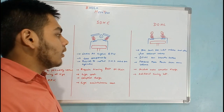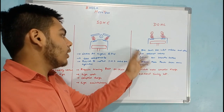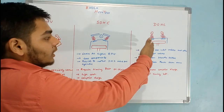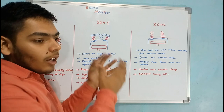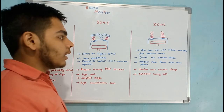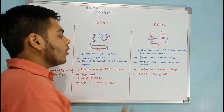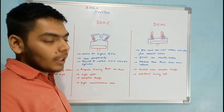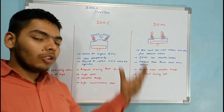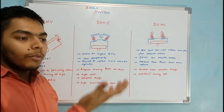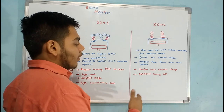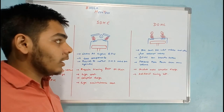With DOHC, one cam is dedicated to the inlet valve and another to the exhaust valve. DOHC can breathe better because you can independently change the timing of the inlet valve — when intake goes down it can introduce more air-fuel mixture into the cylinder. It also produces more power from the same volume because as the inlet valve timing is optimized, more air-fuel mixture enters, burns, and produces more power.